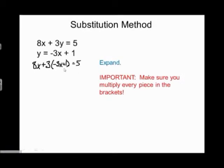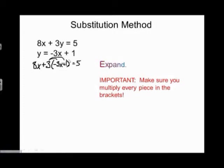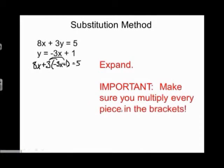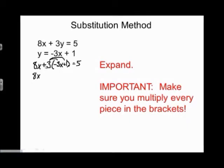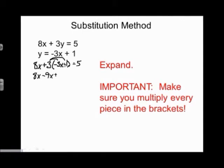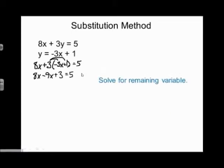Next, I'm going to expand by multiplying the 3 by all the pieces in the brackets. It's important to multiply every piece in the brackets — a common mistake is people multiply the 3 by negative 3x but not by the plus 1. So we'll make sure we do both. Positive times negative gives negative, and 3 times 3 is 9, leaving us with negative 9x. Then for the second piece, positive times positive: 3 times 1 is 3, equals 5. After that, we solve for the remaining variable — only x's now.